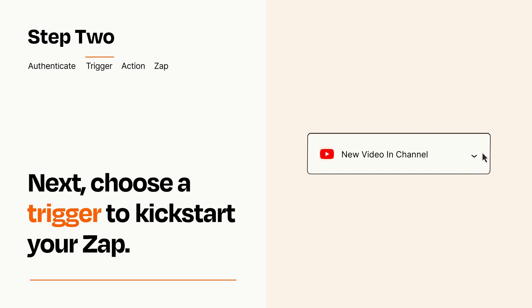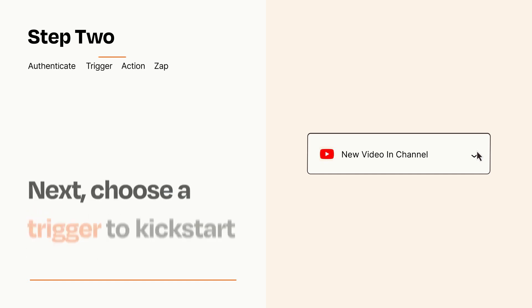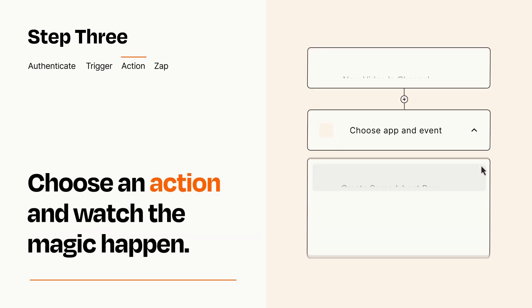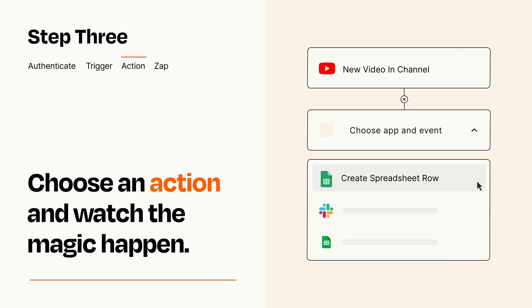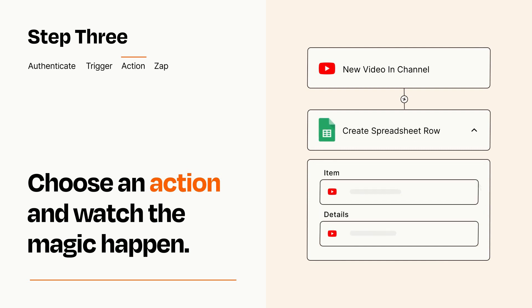This last part is where the magic happens. Choose the action you want to happen in your target app. You'll see a bunch of fields where you can specify the details of your Zap. You can type free-form text or pull data in from your trigger step as needed.